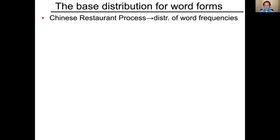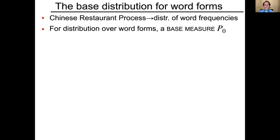We're going to couple the Chinese Restaurant Process with what's called a base distribution for word forms. The Chinese Restaurant Process gives us a distribution over word frequencies — if you run it forward stochastically you'd get different histograms of word frequencies from most to least frequent. The second part is a distribution over what the forms of words actually are, called the base measure. In the Goldwater et al. work being described here, it's called P-naught.